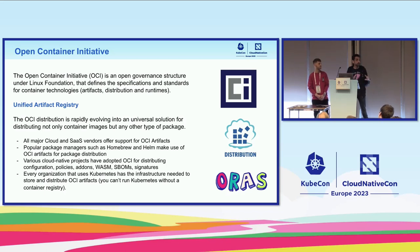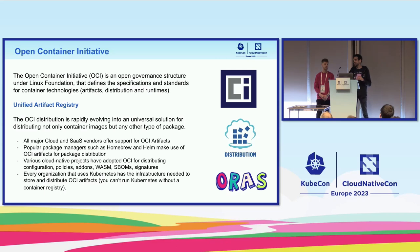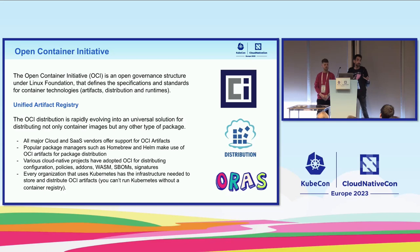Major package managers have moved to OCI as their default storage. Helm version 3 did this switch, and we also supported it in Flux. And recently, Homebrew. If you are building a package manager today, instead of building your own distribution system, please look into OCI — you'll find a great community, great solutions, and great SDKs. You can use OCI to distribute whatever you want: it doesn't have to be a container image. It can be other types of binaries, configuration, documentation — it's a great way to unify package management and artifact distribution.